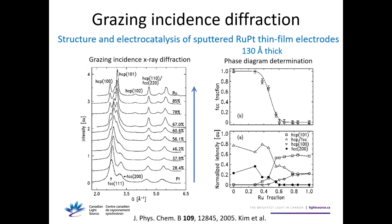One last example of grazing incidence diffraction on a polycrystalline film: this time ruthenium-platinum zinc film electrodes. They were increasing the ruthenium content in this mix and noticed that as they increased it, there is a phase transition from FCC to HCP. Most interestingly, the phase transition in the zinc film happens at a different concentration compared to the same bulk material. They were able to make a phase diagram as a function of ruthenium fraction for the electrode material.